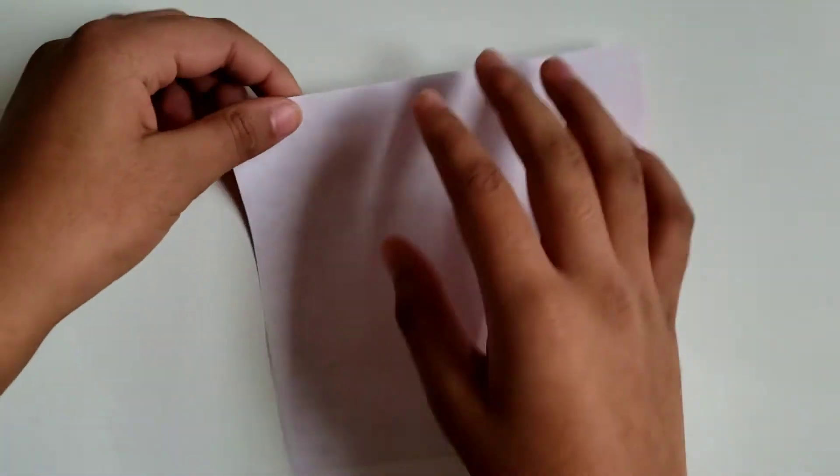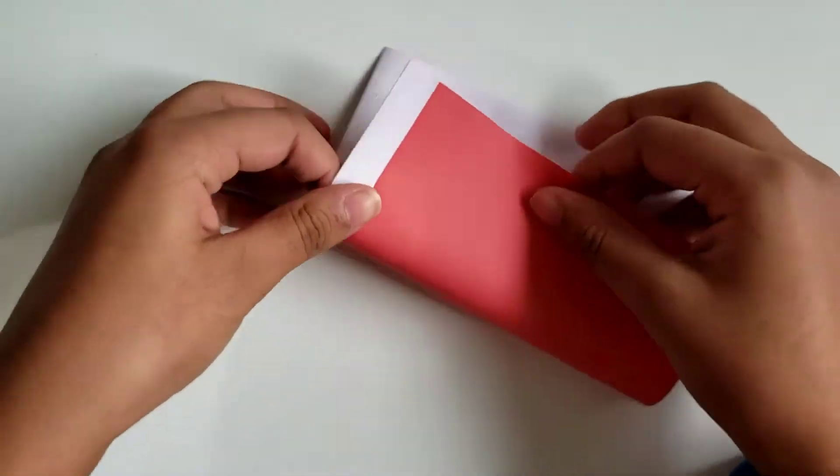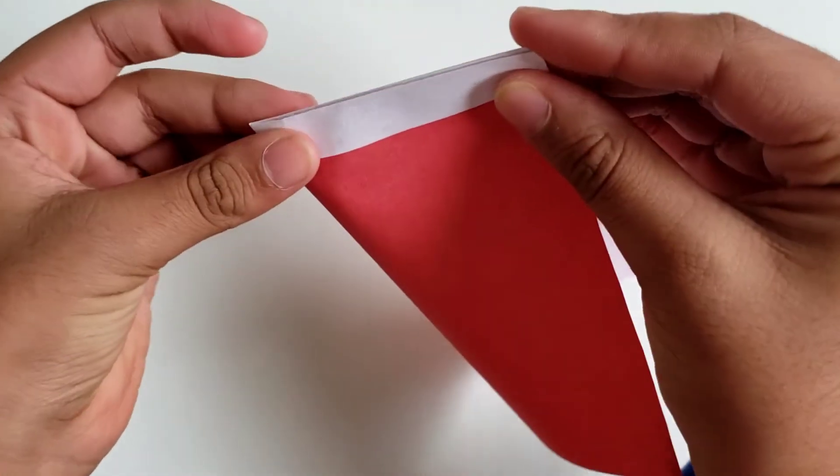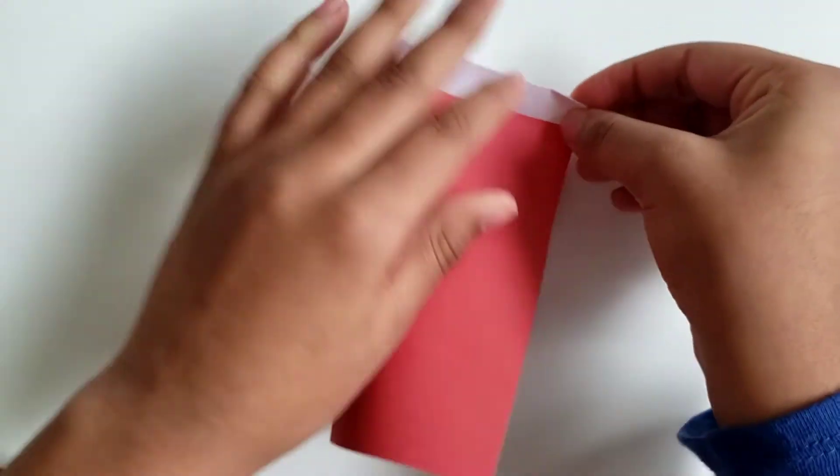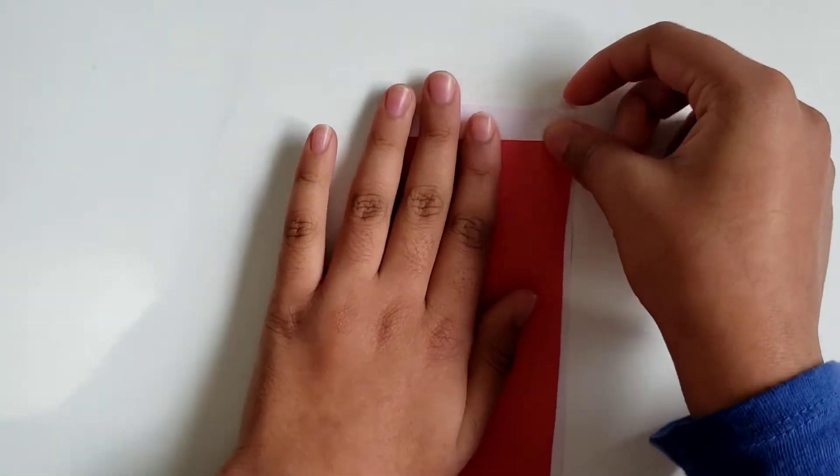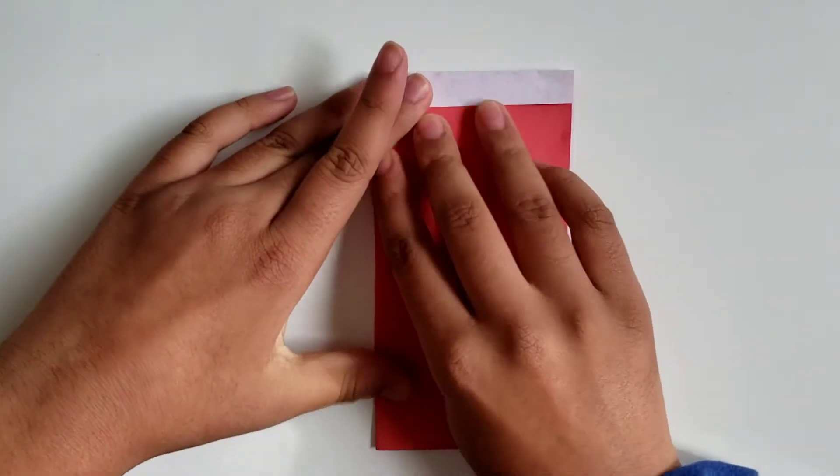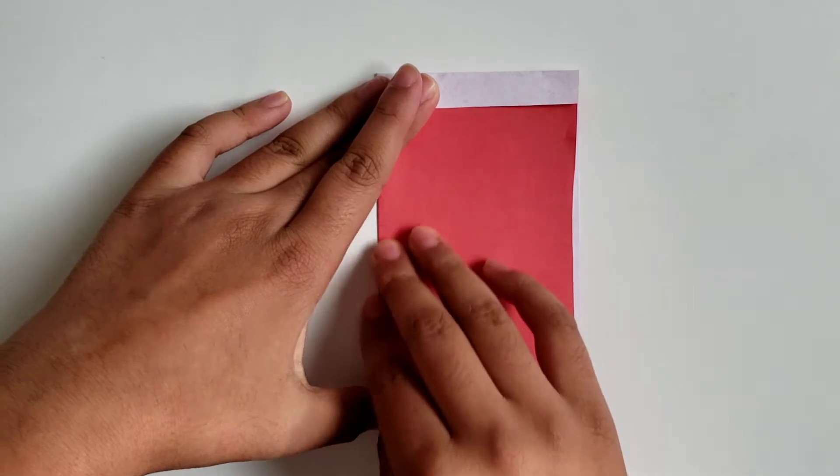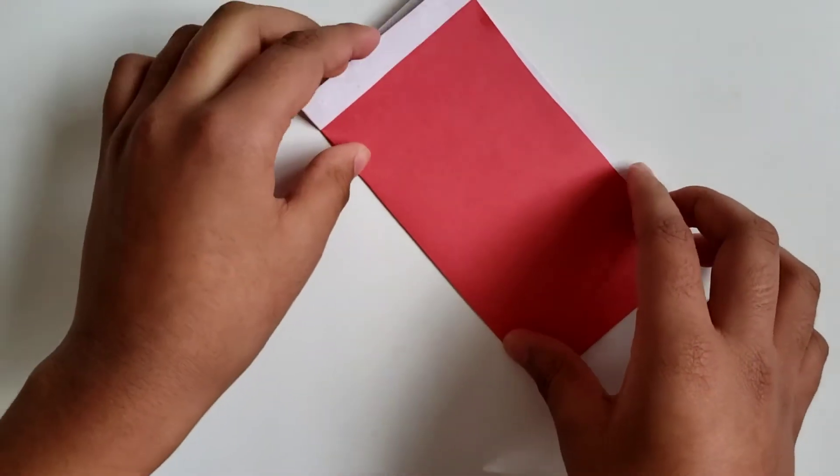Next we're going to flip to this side and we're going to fold it in. After that we're going to open it up and fold this side inwards to the center crease that we just made.